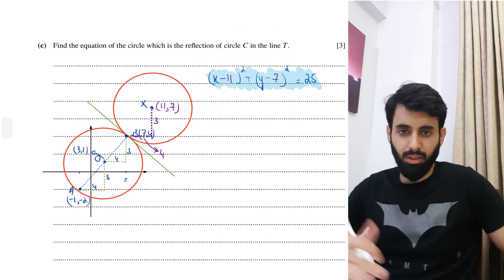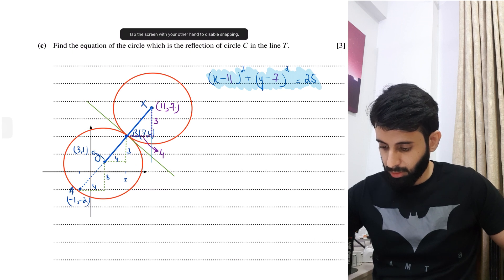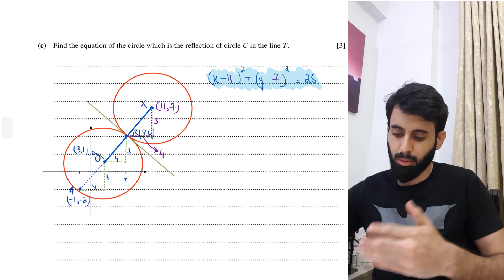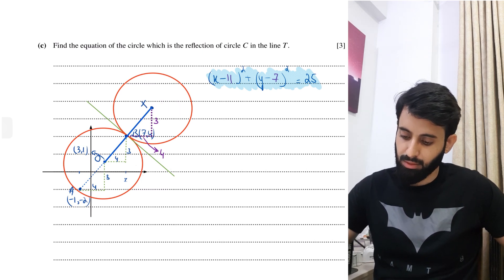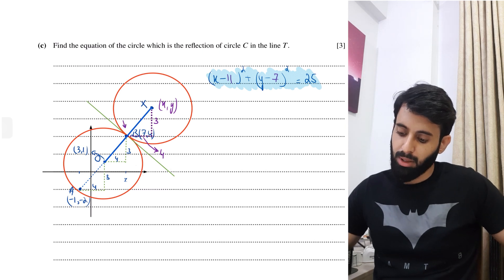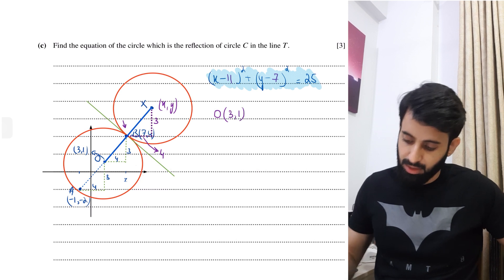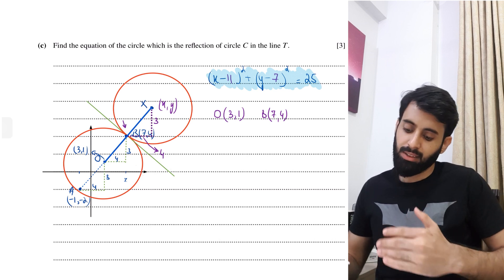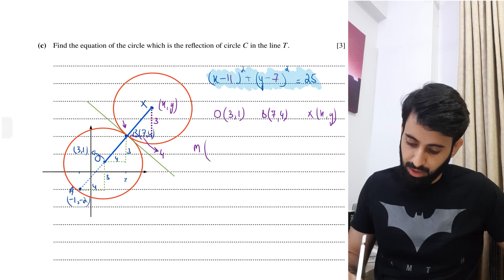If you don't want to use the vector method, here's an alternative. Notice that the line from center O of circle C to center X of the reflected circle passes through B. Since B lies on the tangent line, B is exactly the midpoint between O (coordinates 3, 1) and the new center X (coordinates X, Y). You can use the midpoint concept to find the new center.